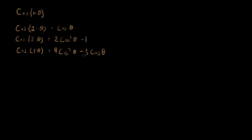For cosine 2θ we have two cosine squared theta minus one — a polynomial in cosine theta. For cosine 3θ we have four cosine cubed theta minus three cosine theta — again a polynomial in cosine theta. If we keep doing this, we keep getting these polynomials in terms of cosine theta. Because of that, people have given a name to these polynomials: they call them Chebyshev polynomials of the first kind.